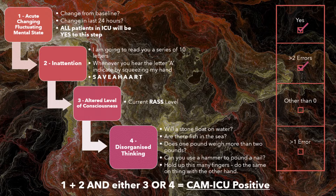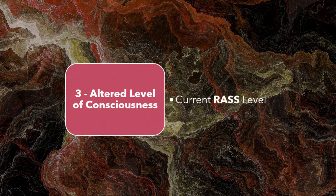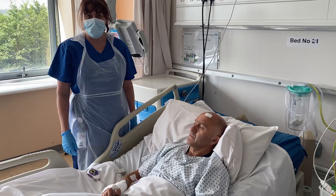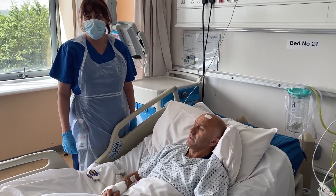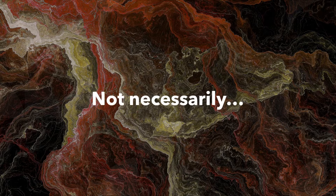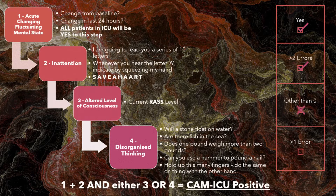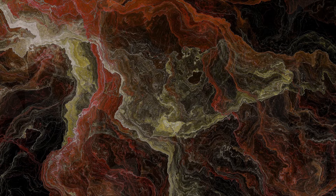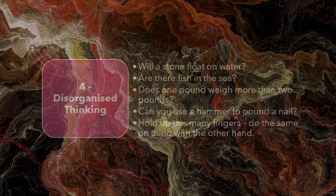Step 3 looks at altered levels of consciousness. All you have to ask is: is the patient's RASS anything other than zero? Martin appears to have a RASS of zero, but that alone does not mean he's not delirious. At this stage in the algorithm, if Martin had a RASS score of anything other than zero, he would be CAM-ICU positive and the assessment would be complete. However, since his RASS is zero, we need to move on to the last step — step 4.